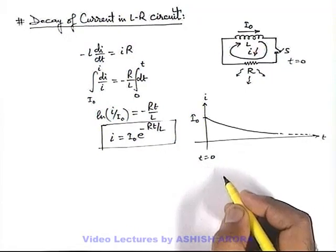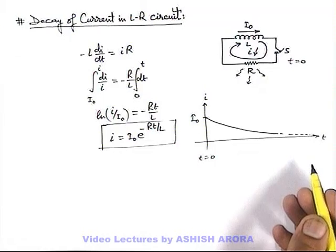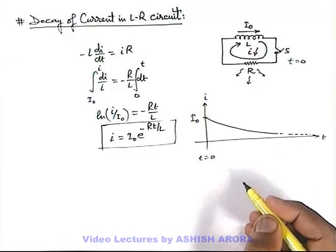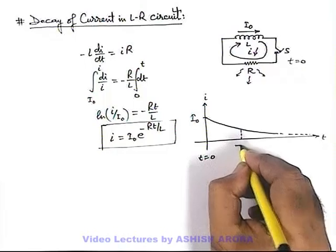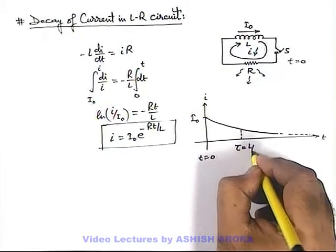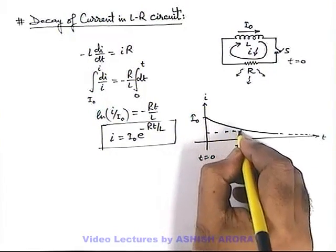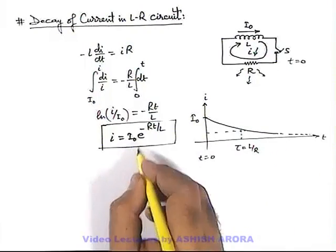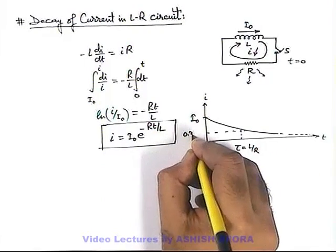It approaches zero after a very long time duration, or in steady state. At the time constant τ = L/R, the value of current will drop to i₀/e, which is 0.37 times i₀.